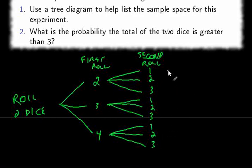Now this first branch represents the outcome two, one. That is two on the first die, one on the second die. The second branch represents the outcome two, two. The third branch represents the outcome two, three, and so on. I think we have the idea.